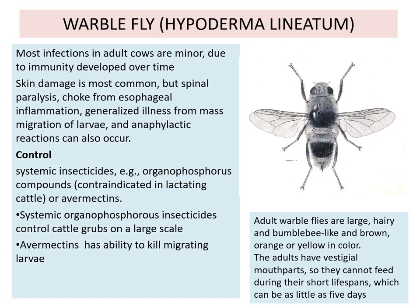Adult warble flies are large, hairy, bumblebee-like and brown, orange or yellow in color. The adults have vestigial mouth parts, so they cannot feed during their short lifespan, which can be as little as 5 days.